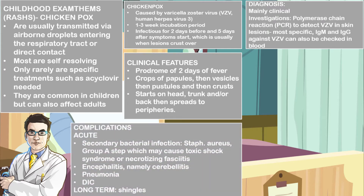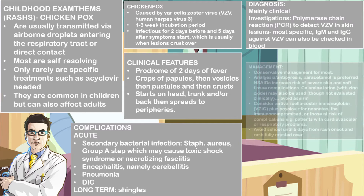Complications may be acute or long-term. Acute complications include secondary bacterial infection, which usually happens when the child scratches their skin and causes abrasions, breaking the skin's defense. You may be infected with Staphylococcus aureus or group A streptococcus, which may lead to toxic shock syndrome or necrotizing fasciitis. There may also be encephalitis, namely cerebellitis, pneumonia, and disseminated intravascular coagulation. Long-term complications include shingles.